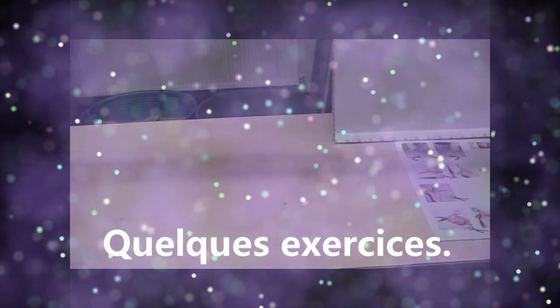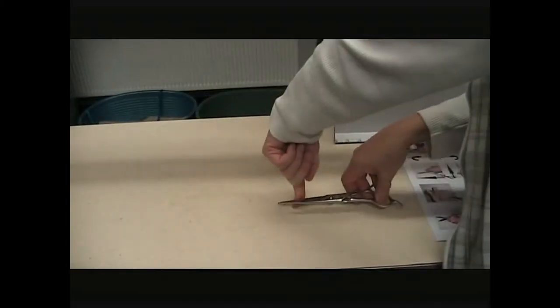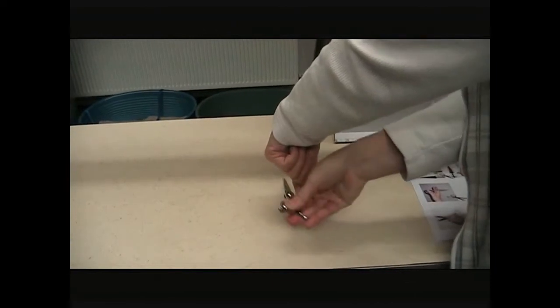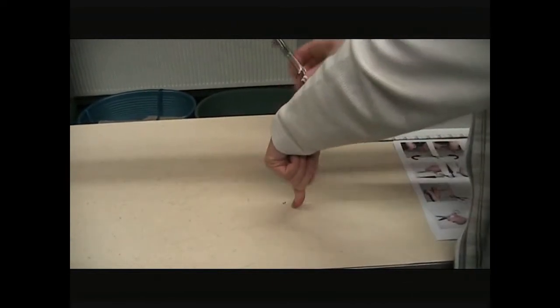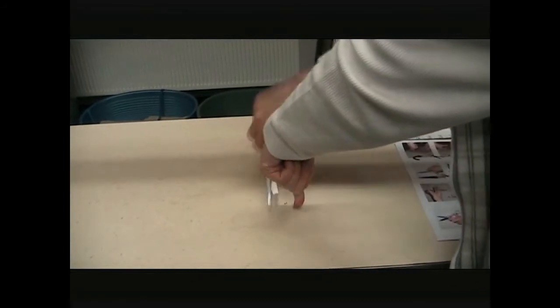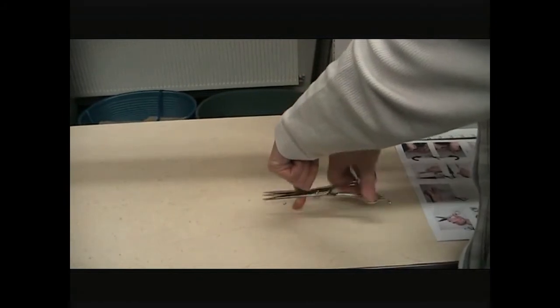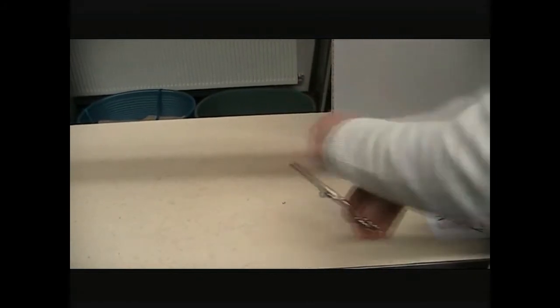Le premier exercice : il faut mettre son doigt de la main gauche comme ça. Bien sûr, tenir ses ciseaux de façon correcte et faire travailler le poignet de la main droite autour de votre doigt.